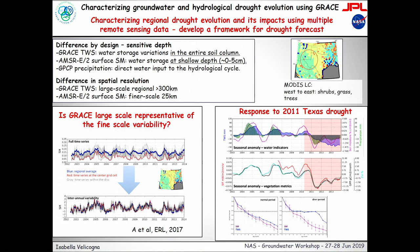The example on the bottom left shows AMSRE-2 soil moisture at the original resolution. The blue line is the GRACE average — what GRACE would see, the average over the footprint. The red line is the time series of soil moisture at the center point, and the gray lines are at every grid cell within the footprint. If we remove the seasonal variability, we find that those lines fall on top of each other, meaning the average is representative of the interannual variability at each single point. Because we have a surface-subsurface coupled aquifer, we can use GRACE information as representative of what occurs also at the sub-scale.